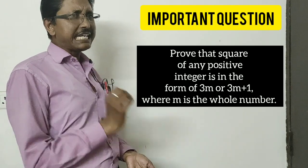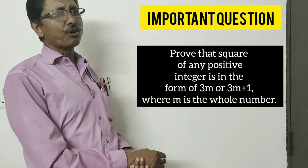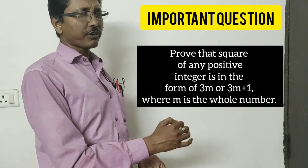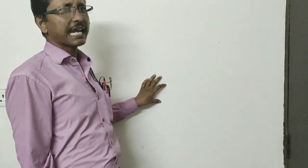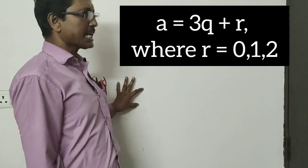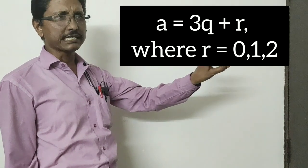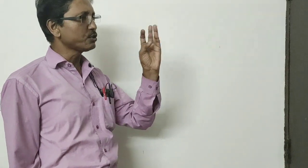Most important result you have is by using Euclid division lemma, we can prove that the square of any positive integer is in the form of 3M or 3M plus 1. How can we prove that? Let A be any positive integer. When we divide A by 3, let Q be the quotient and R be the remainder. So A can be written as 3Q plus R, where R is greater than or equal to 0 and less than 3, or you can say R equals 0, 1, or 2. Three cases.